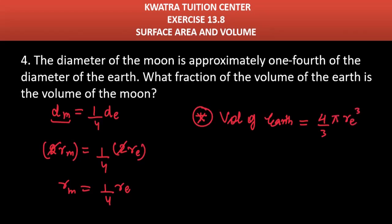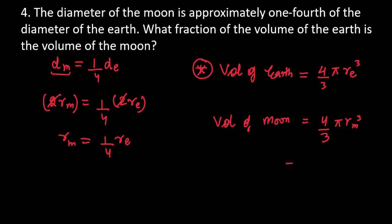RE cube we will write here and we will write the volume of moon. What will be the volume of moon? It will be equal to four by three pi RM cube. Now, RM is the value we will substitute and we will find the volume of moon.